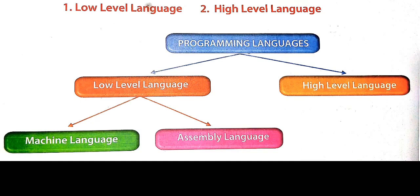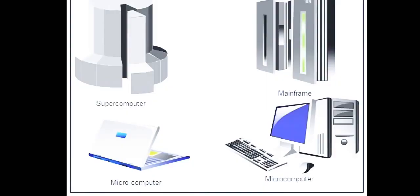The next type is high-level language. The language which is understood by users is called a high-level language. The language that only a computer can understand is machine language; the language that a user can understand is high-level language. High-level language is translated to machine language by software called a compiler.